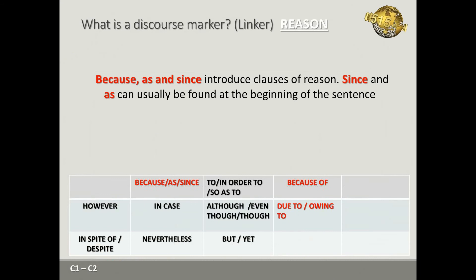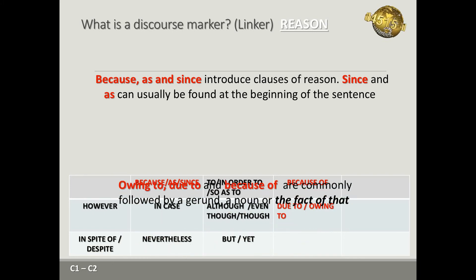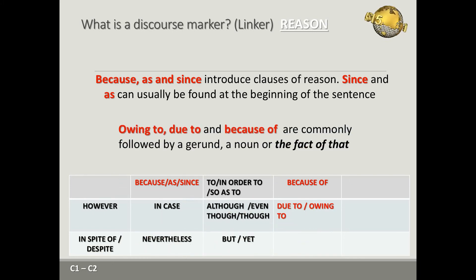Now we're talking about discourse markers or linkers that express reason. 'Because,' 'as,' and 'since' introduce clauses of reason. 'Since' and 'as' can usually be found at the beginning of the sentence. 'Owing to,' 'due to,' and 'because of' are commonly followed by the gerund, a noun, or the phrase 'the fact that.'